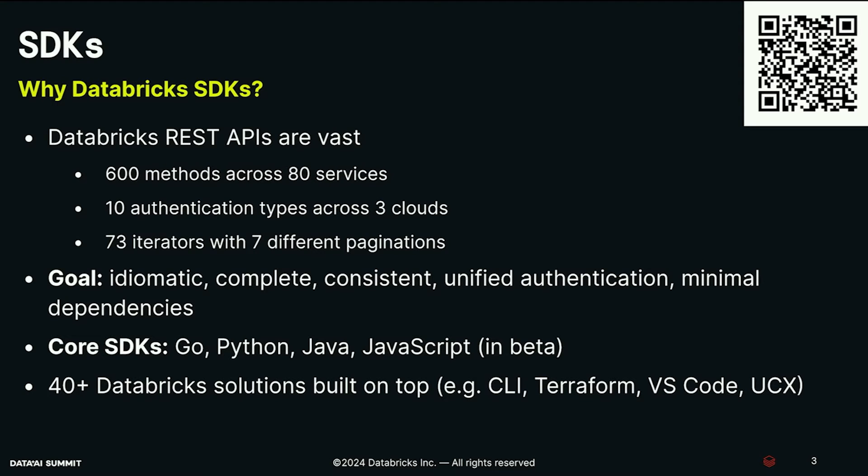At the moment we have a few core SDKs: Go, Python, Java, and JavaScript. Databricks Labs also has an R SDK. They are production-ready — we actually have over 10,000 customers using them, and we handle billions of requests across services. We also have over 40 Databricks solutions built on top of them, including our CLI, Terraform, VS Code extension, and UCX, which is a tool for migrating to Unity Catalog.